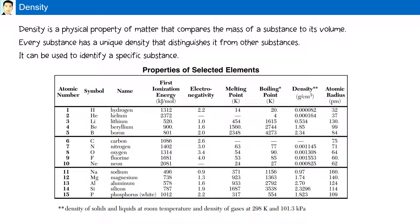For example, in the chemistry reference table S, there are selected properties of elements, including densities. For example, the density of sodium is 0.97 gram per centimeter cube, while the density for magnesium is 1.74 gram per centimeter cube. This data can be used to distinguish one element from the other.